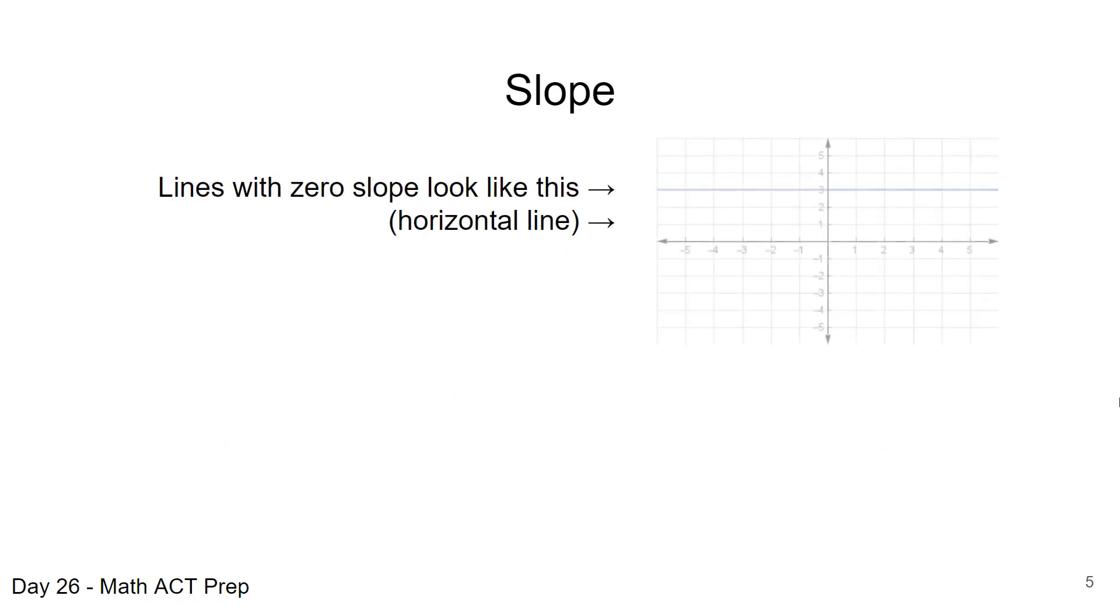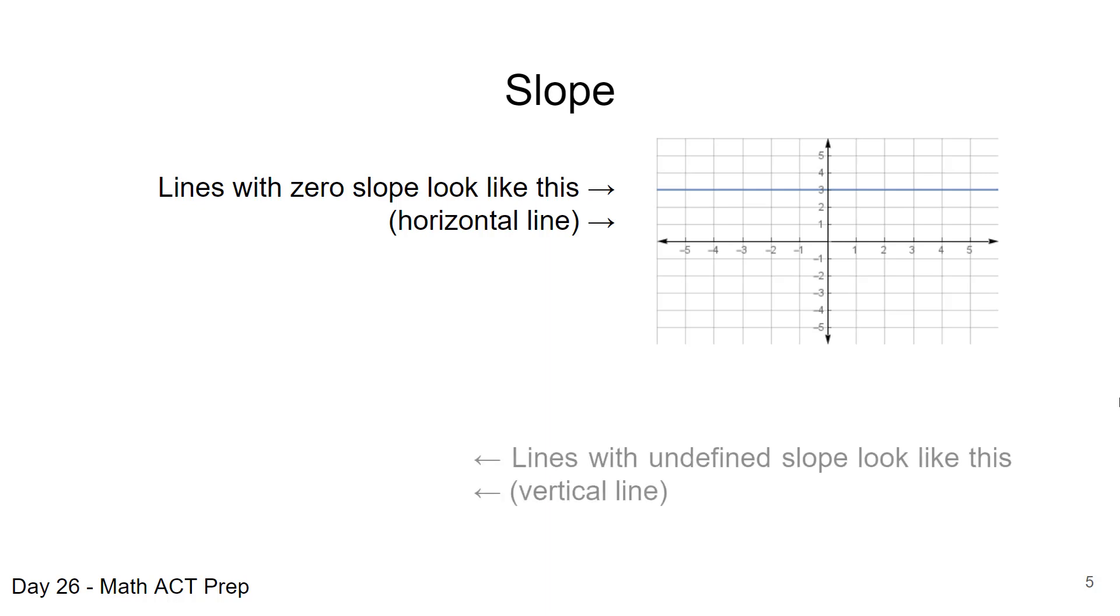We also have two other cases. The slope of a line can be zero, and that's when you have a horizontal slope. Our blue line right here is horizontal. There is no change in the y value, and the x values are what change, so that's a zero slope.